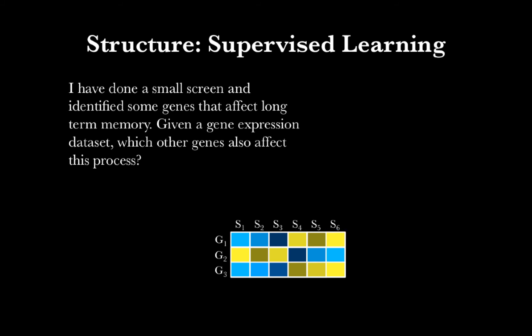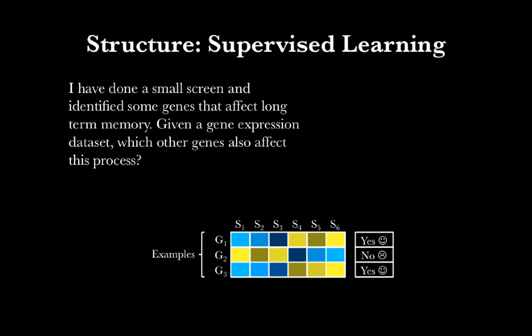With this matrix where we have our samples in columns and our genes in rows, let's talk about the problem. We have genes that we've actually labeled — genes that affect long-term memory. So for any given gene, gene 1 for instance, our screen showed that it did affect long-term memory; gene 2 did not; gene 3 did. These are our examples — the entities that we know something about. In addition to examples, we also have features: these are the things that describe the examples that we know something about.